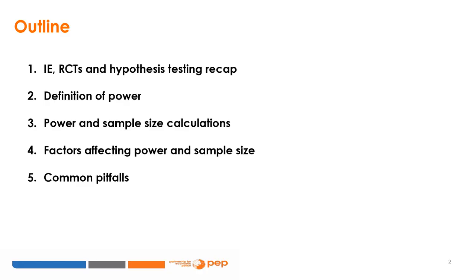Welcome to a new class in PEP's online course on policy impact analysis. We will now introduce the basics of sample size determination and power calculation for the design of randomised control trials. We will begin this class by reviewing a few important concepts related to impact evaluations, randomised control trials, and hypothesis testing. We will then go on to define statistical power and present power and sample size calculations in practice.